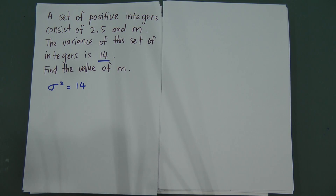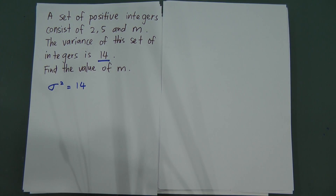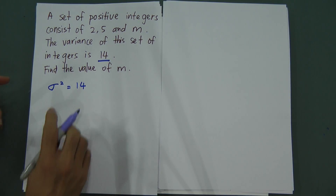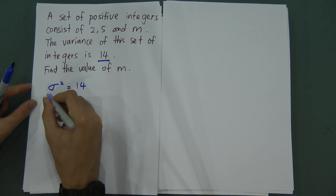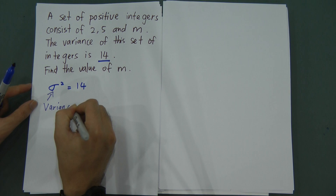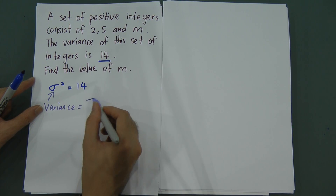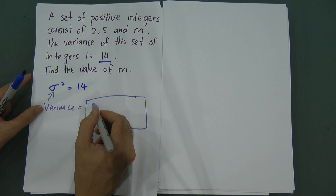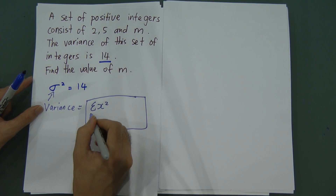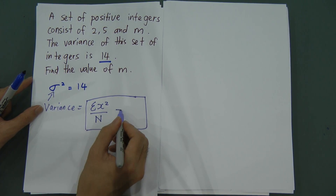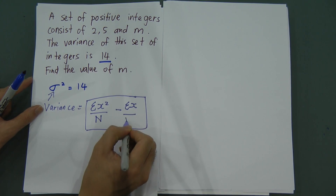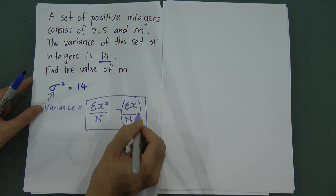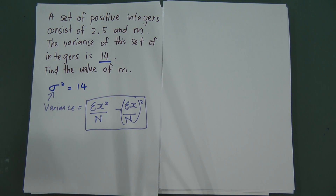Before you start this question, you have to know this is what we call ungroup data. For ungroup data, the variance formula is a little bit different from group data. The symbol for variance is σ². The variance formula is: sum of x squared divided by n, minus the quantity (sum of x divided by n) squared.